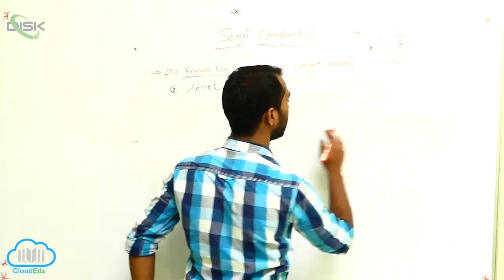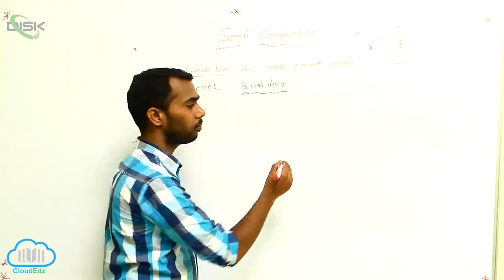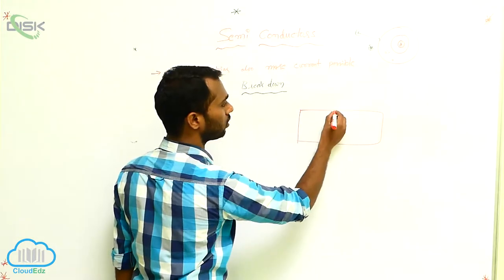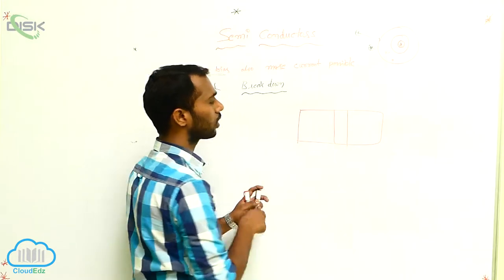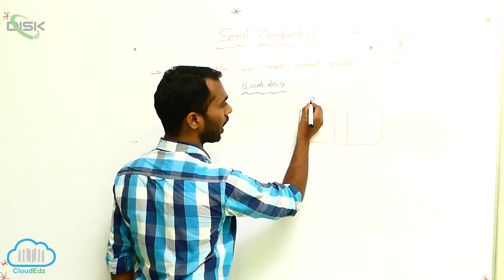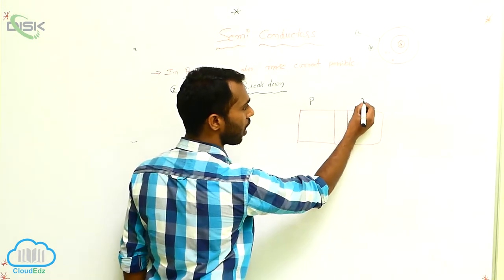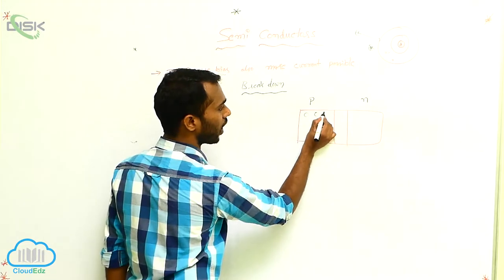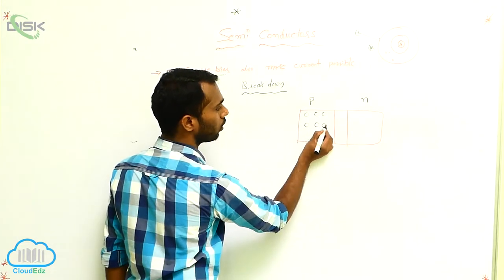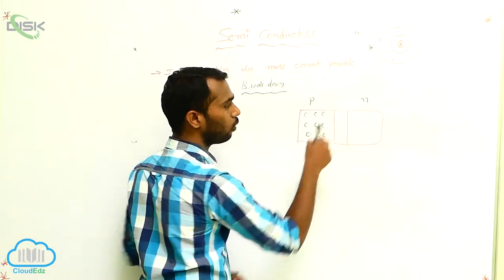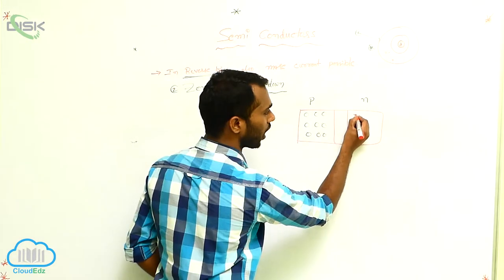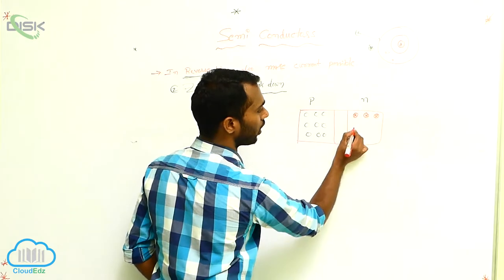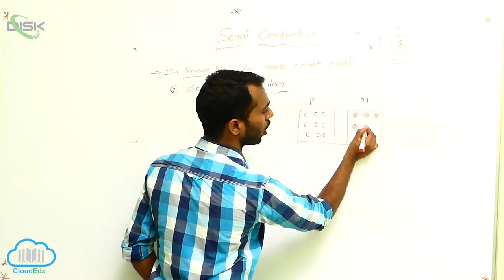I am going to draw the P-N junction diagram. What is the P-N junction diagram? There is a P-type and an N-type. This is the depletion layer. P means positive type — the majority charge carriers are holes. N means negative type — the majority charge carriers are electrons, and the minority charge carriers are holes.